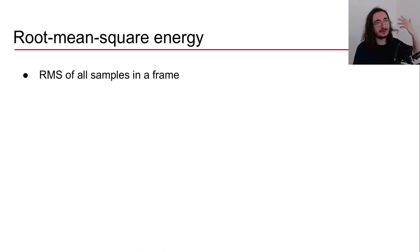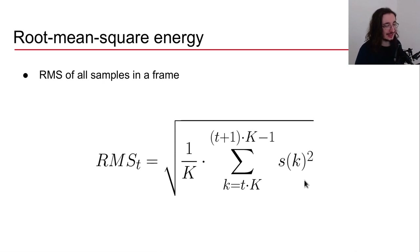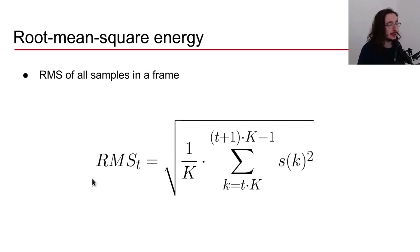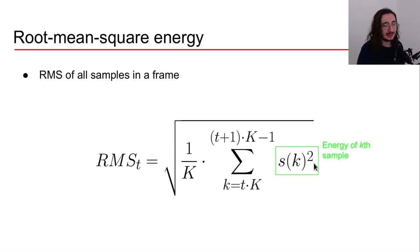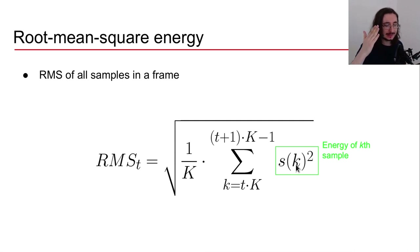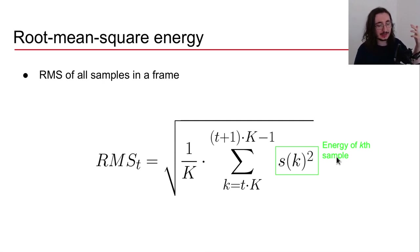The formula may look intimidating but let's break it down. The root mean square energy at frame t uses s(k) — the amplitude at sample k — but this time it is squared. The square of the amplitude gives us the energy, so s(k)² is the energy of the k-th sample.